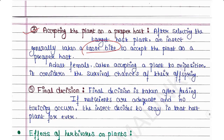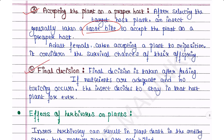The last step is the final decision, which is taken after feeding. After accepting the plant as a proper host, the insect feeds — if nutrients are adequate and no toxicity occurs, the insect decides to stay in that host plant permanently.